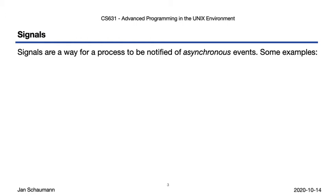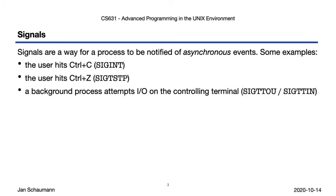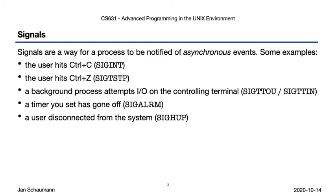You've seen a number of examples, and at the very least you've been using the SIGINT signal countless times yourself. This signal, like several others we've already seen, are generated by the terminal driver when a certain keyboard combination is pressed. Among those, we count, for example, SIGTSTOP, which we talked about in our last video. We also saw some signals being generated by processes without our help, such as when a background process wanted to perform I/O on the terminal. Other things that may lead to a signal being generated are a timer goes off, a user disconnects from the controlling terminal causing SIGHUP to be delivered to the session leader, or a user resizing a window and requiring the visual editor to redraw the screen.